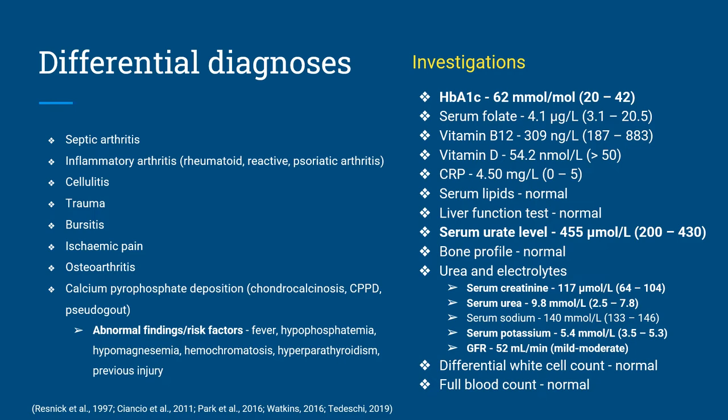Inflammatory arthritis was excluded in a similar fashion. Although rheumatoid factor was not included in the blood test, all inflammatory markers were normal. The pattern of involvement was monoarticular and his pain was not any worse in the morning or with rest, which are typical features of inflammatory arthritis like rheumatoid. This was sufficient clinical evidence to rule out the differential. Cellulitis was also considered; however, clinically there was no evidence of any recent damage to the skin or history of trauma.